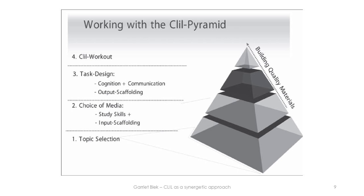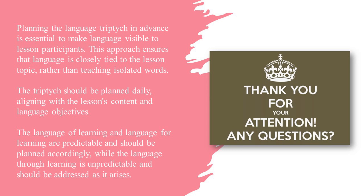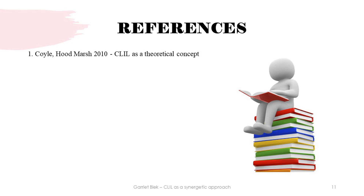To summarize: planning the language triptych in advance is essential to make language visible to lesson participants. This approach ensures that language is closely tied to the lesson topic rather than teaching isolated words. The triptych should be planned daily, aligning with the lesson's content and language objectives. The language of learning and language for learning are predictable and should be planned accordingly, while the language through learning is unpredictable and should be addressed as it arises.